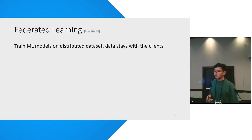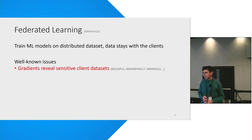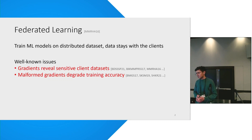Federated learning is used to train machine learning models where data stays with the client and the data is highly distributed. However, prior works have pointed out that gradients reveal sensitive data when clients send the gradients to the server, and on top of that, malicious clients can send malformed gradients which degrade training accuracy.